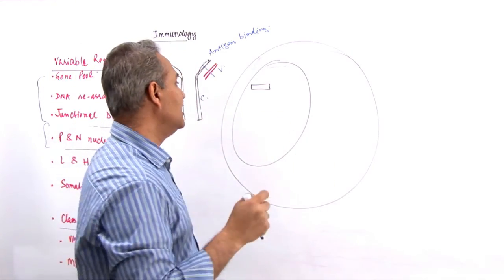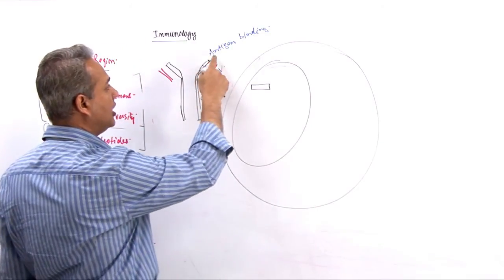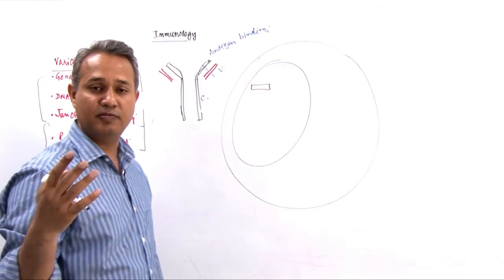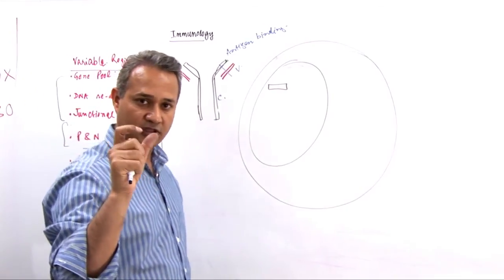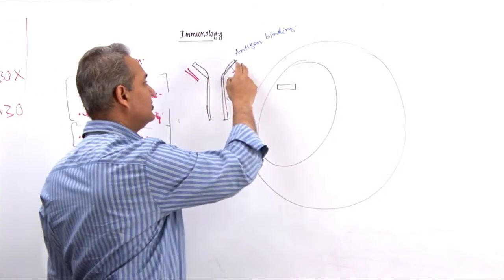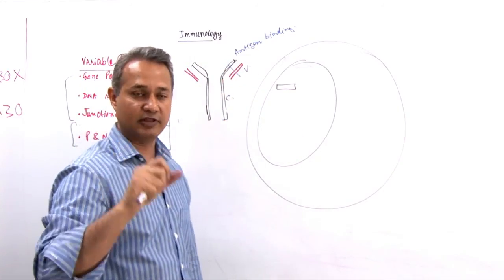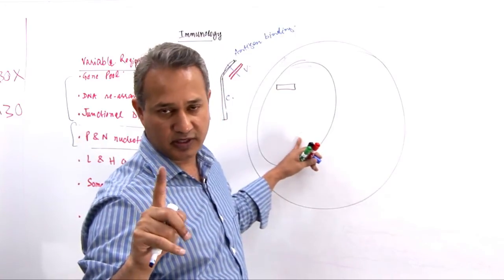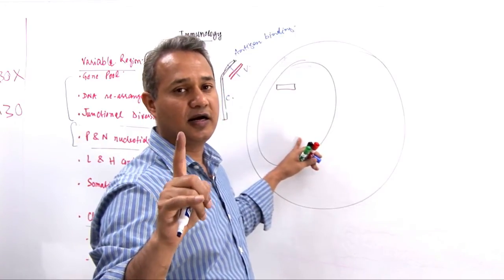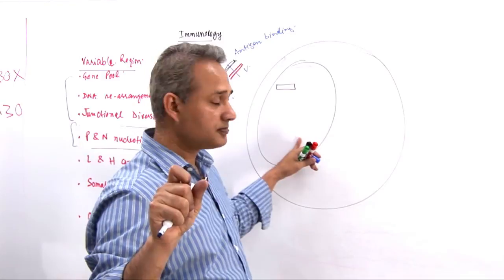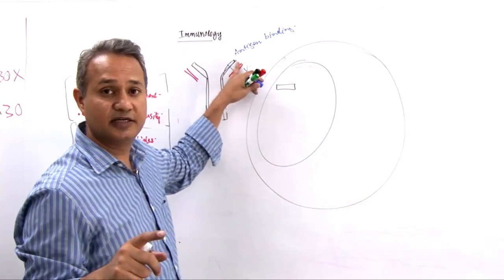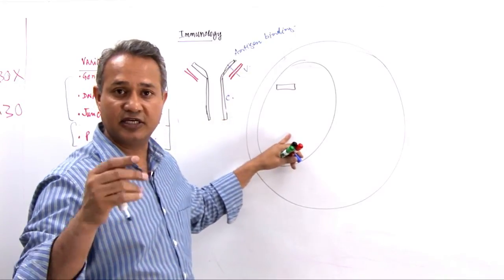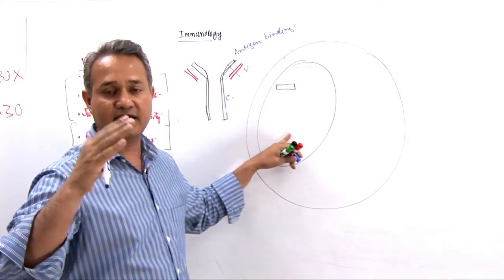Once the B cell has become productive and can make immunoglobulins, now the question is, how would it create the diversity on the binding site? There are millions of antigen types, and the B cell should be able to connect with them. One B cell would produce one kind of immunoglobulin, and that one kind can bind with one kind of antigen. When I say one kind, that is on the binding site, the epitope type. Otherwise, one B cell can actually create IgM and IgD simultaneously, then it can create IgG, IgE, and IgA.